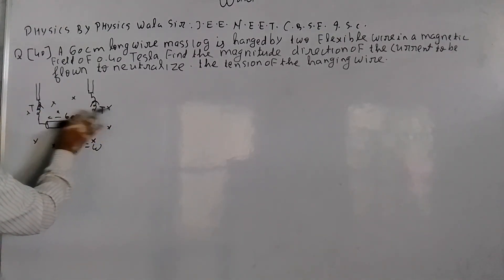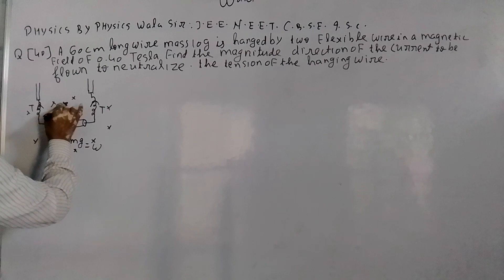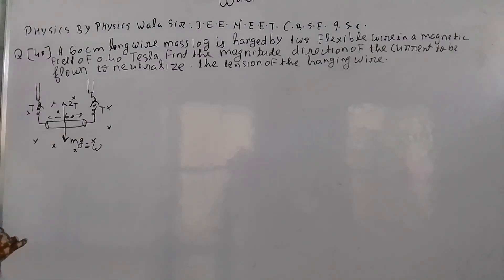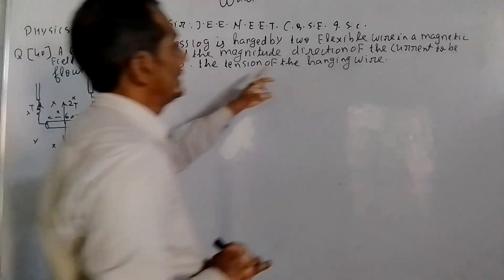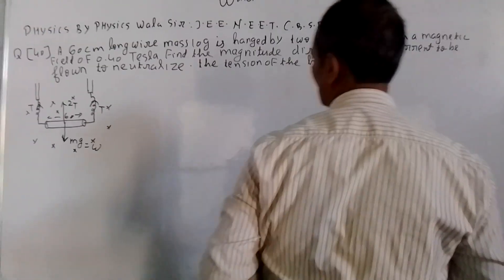Then the mg force acts. Now 2T equals mg force, according to equilibrium. The tension core is equal to 2 cuts.